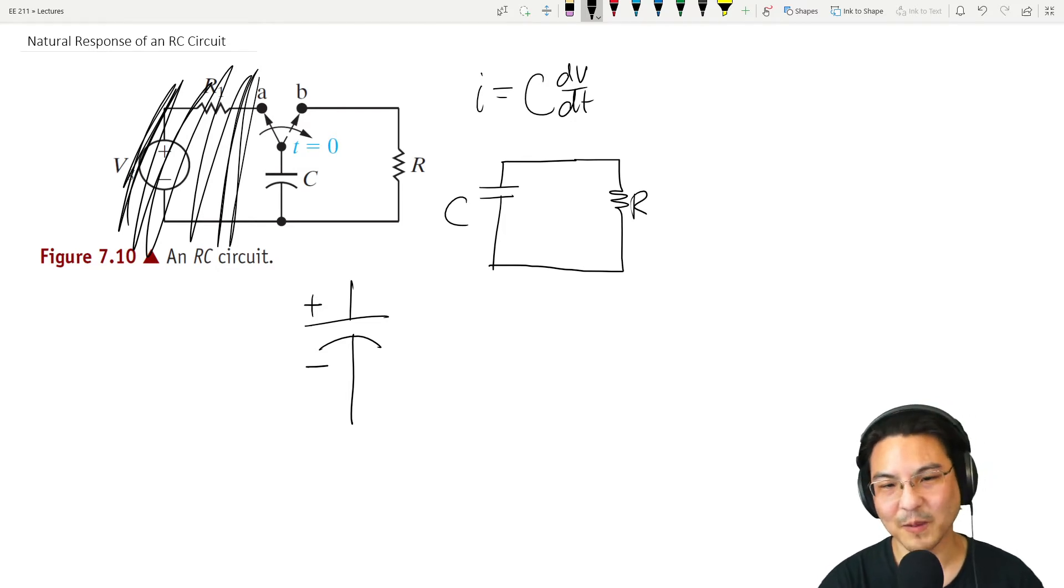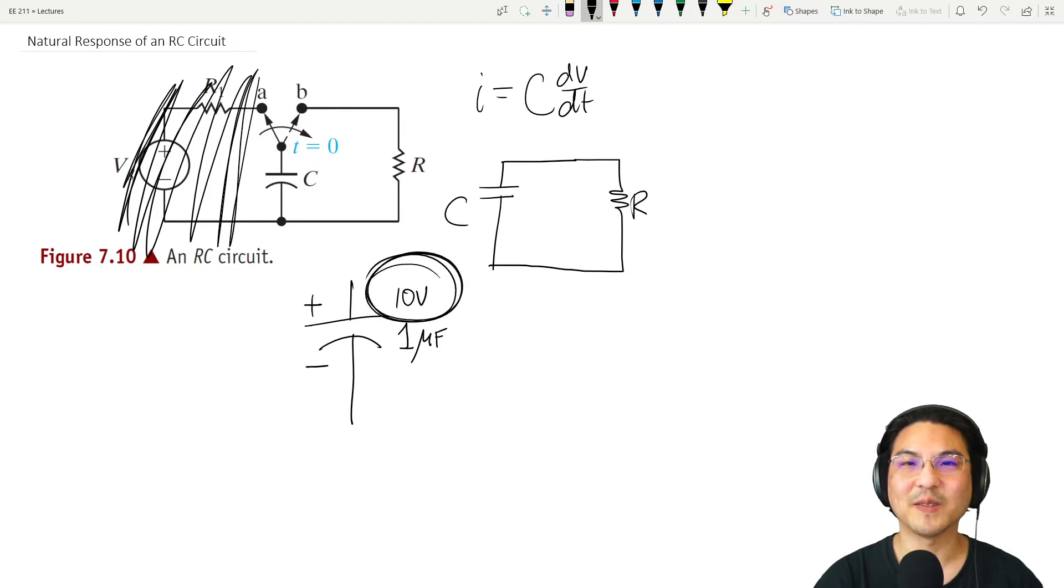Some like ceramic capacitors are non-polarized, so then it doesn't matter which direction. Also capacitors, like say there is a capacitance like say one microfarad, and then also a voltage rating, let's say it's 10 volts. You have to be careful not to exceed the voltage rating of a capacitor, just like how resistors have a power rating like quarter watt. Capacitors have a voltage rating.